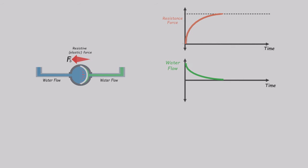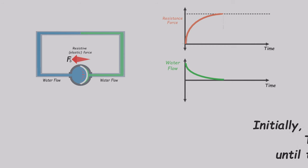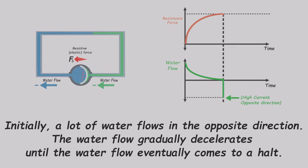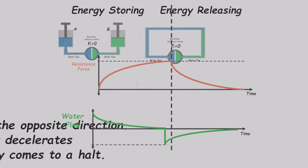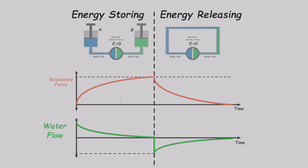If we remove the pistons and connect the two ends of the chamber, the membrane can move the water in the opposite direction and return to its initial state. Initially, a significant amount of water flows in the opposite direction. However, as the membrane begins to contract, the force decreases, causing the water flow to gradually decelerate. Let's compare these two situations. Understanding this water analogy will help you better understand how capacitors work. The negative water flow indicates water is flowing in the opposite direction. It's important to note that when we add water to one side, the same amount of water leaves from the other side.